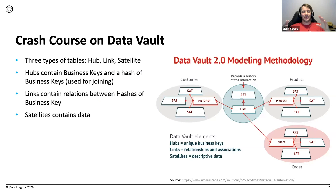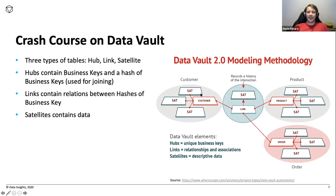In Data Vault, you have three types of tables: hubs, links, and satellites. In hubs, you put your business keys — so let's say you have a customer, and the business key of that customer, whatever ID you have, like a social security number, is going to go into a hub. Then all the other data about the customer is going to live in the satellite.